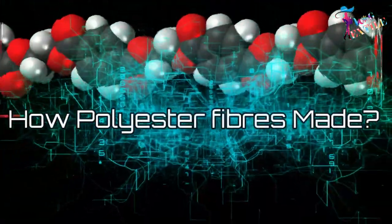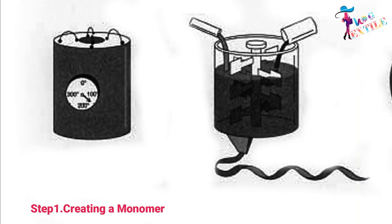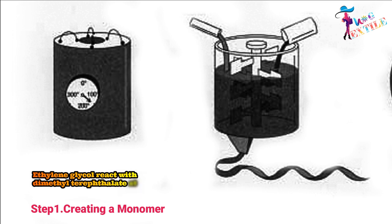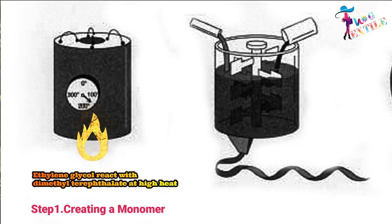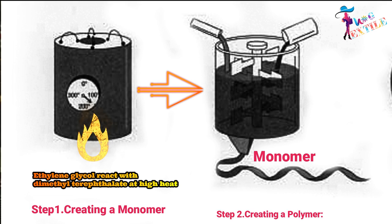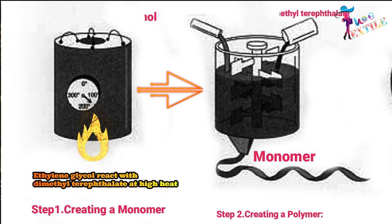How is polyester fiber made? Step 1: Creating a monomer. The process of creating polyester fiber begins with reacting ethylene glycol with dimethyl terephthalate at high heat. This reaction results in a monomer. Step 2: Creating a polymer. The monomer is then reacted with dimethyl terephthalate again to create a polymer.